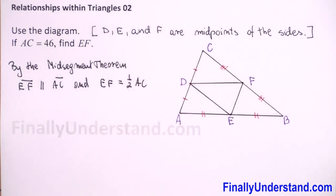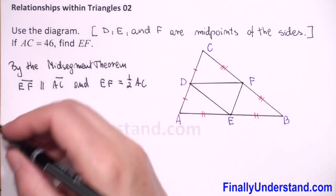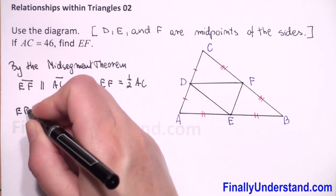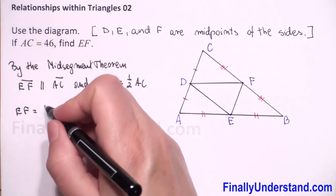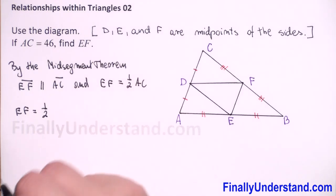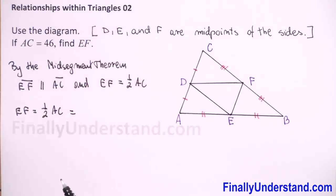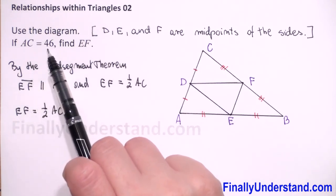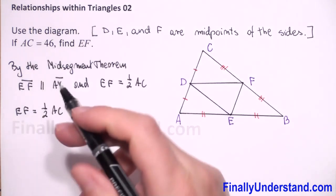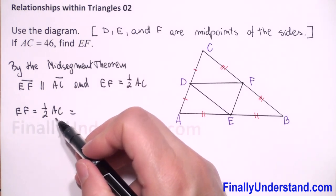So we can write that EF is equal to one half of AC. We have given in this example that AC is 46, so I will substitute AC by 46.